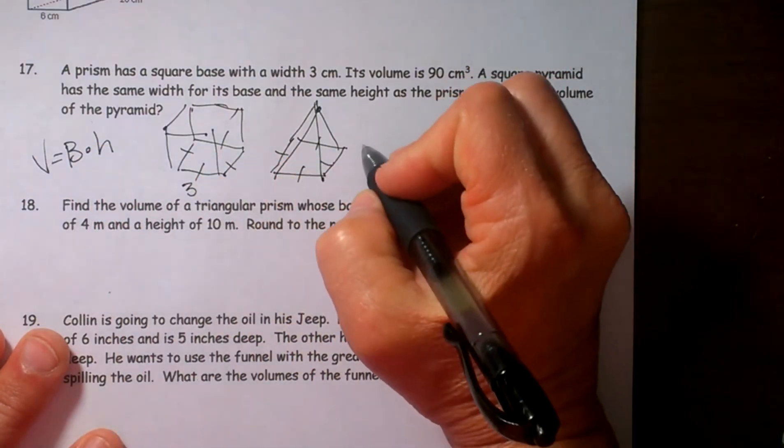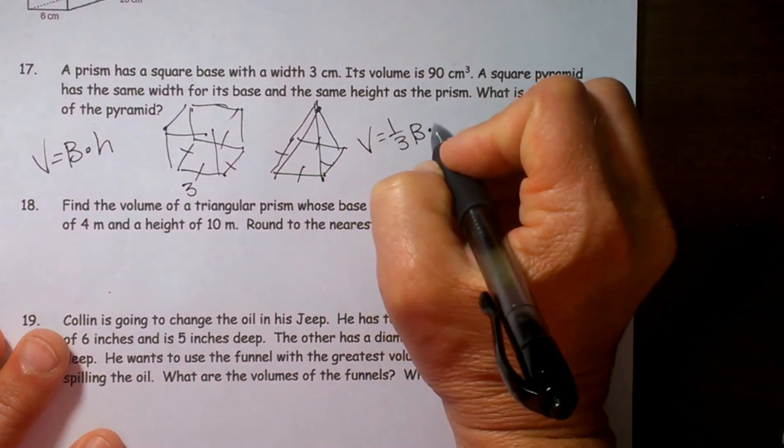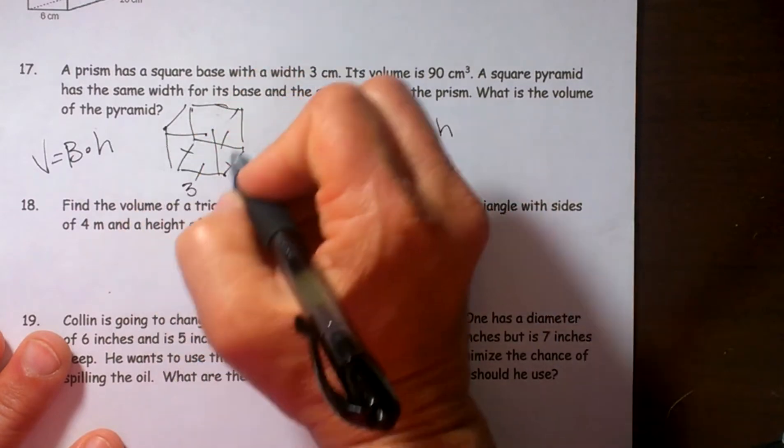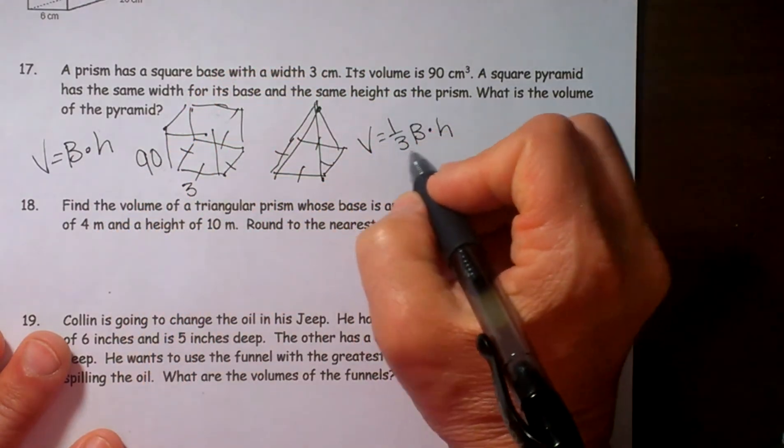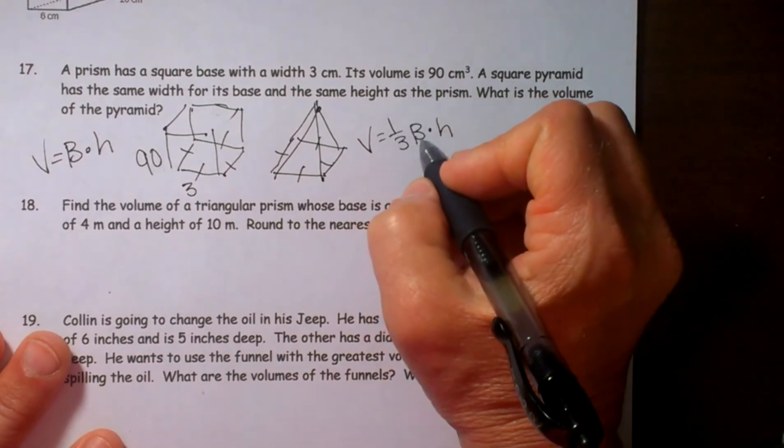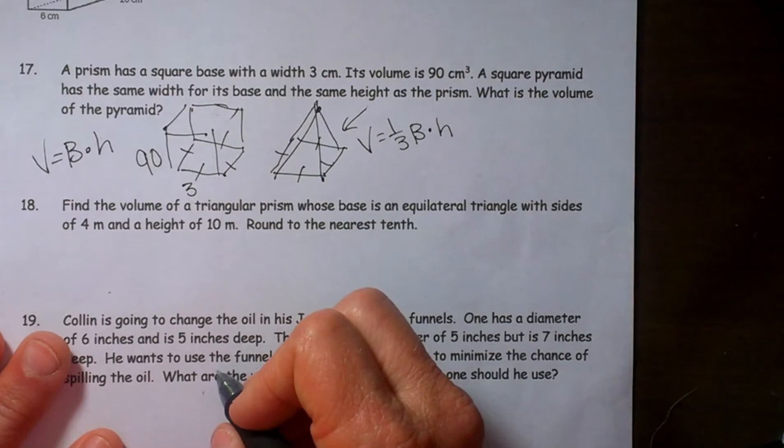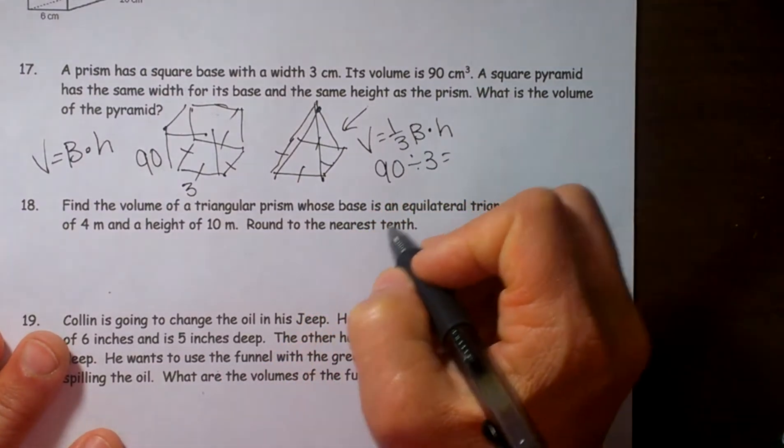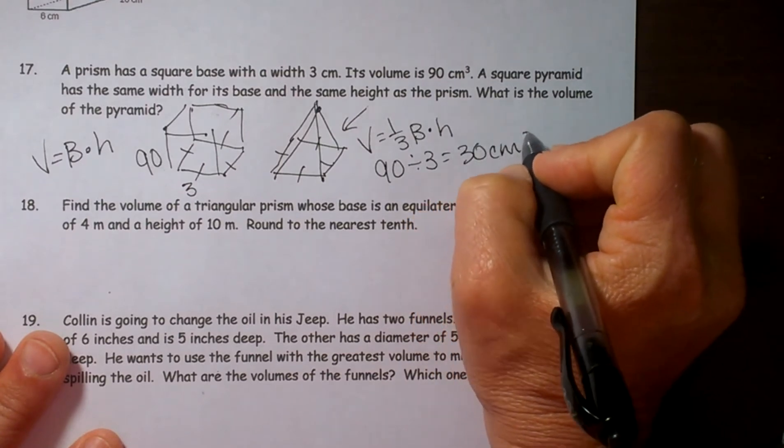But for a pyramid the volume is one third the base area times the height. So if the volume of the related prism is 90, all we have to do is multiply it by one third, which is also dividing by three, to find the volume of the related pyramid. So we are just going to take 90 and divide it by three, which is multiplying by one third, and we get 30 cubic centimeters.